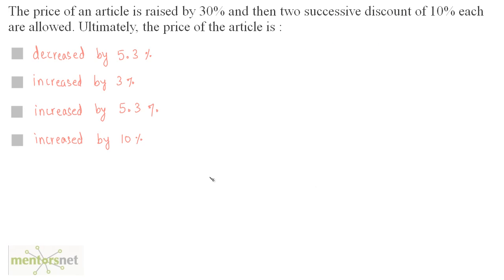The price of an article is raised by 30% and then two successive discounts of 10% each are allowed. What is the ultimate price? Assume the selling price is 100 rupees. The price is raised by 30%, so the new selling price SP1 = 100 + 30% of 100 = 130.